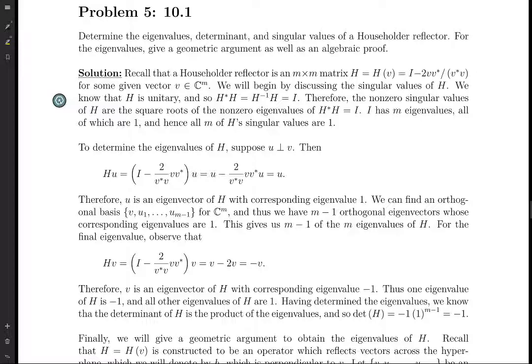If you assume V is zero, it might technically still be a Householder reflector, but it doesn't really make sense in that case. And I'll explain why, because of what we will see when we talk about the geometric argument. But anyways, so the singular values are actually really easy because H is unitary, which we've discussed in the text, which is a fact about Householder reflectors. And so H star H is just the identity.